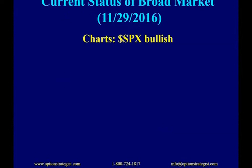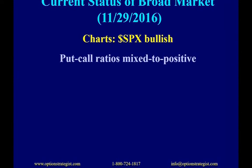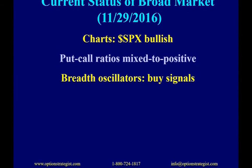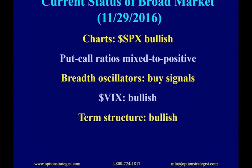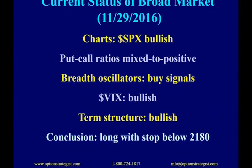Let's sum it up. The S&P chart is bullish — we're at new all-time highs. Put-call ratios are mixed to positive: the standard ratio gave a sell signal being affected by protection buyers who are not true speculators, but the weighted ratio is still on a buy signal. Breadth oscillators are on buy signals. VIX is bullish at low levels, the term structure is bullish, so overall the conclusion is bullish. We're staying long, with a stop below 2,180 if it pulled back there — though I don't expect that soon, and we'd likely get sell signals before that happened.